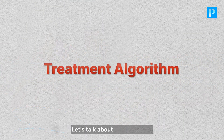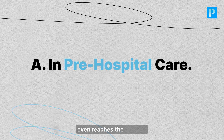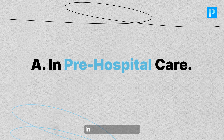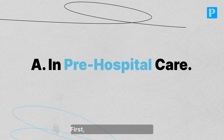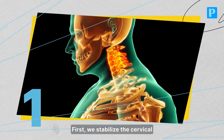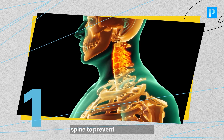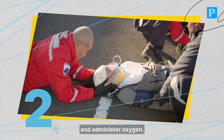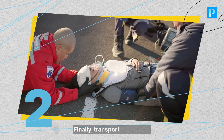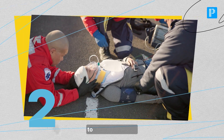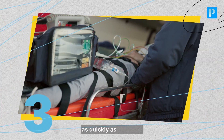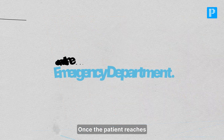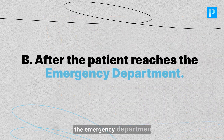In pre-hospital care, first, stabilize the cervical spine to prevent further injury. Next, secure the airway and administer oxygen. Finally, transport the patient to a trauma center as quickly as possible.